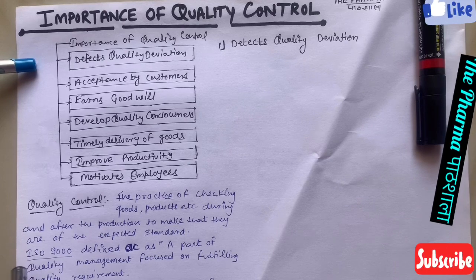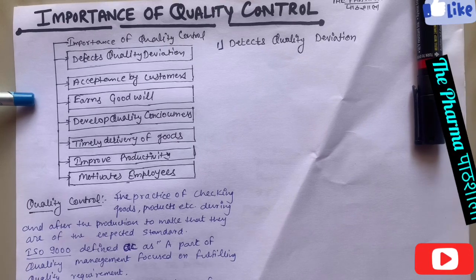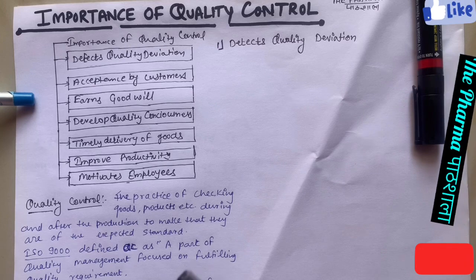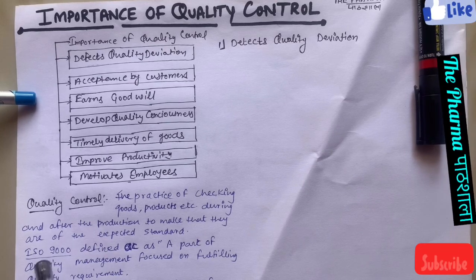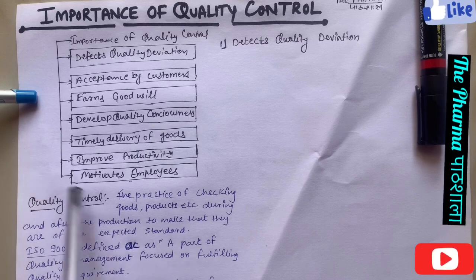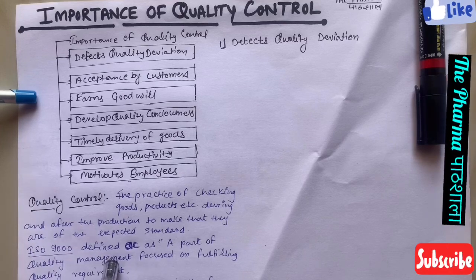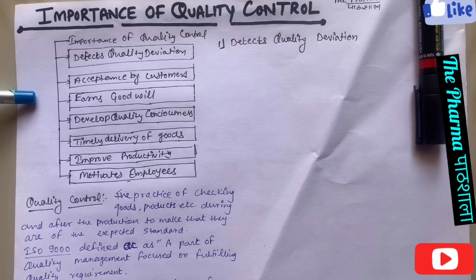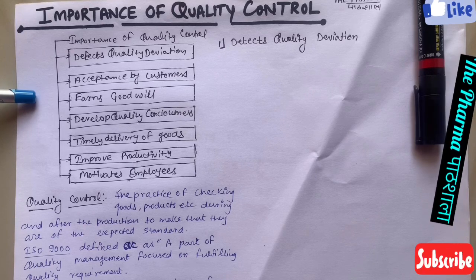एक organization होता है ISO — ISO एक International Organization for Standardization है जो guideline set करता है किसी भी product की quality के लिए। इन्होंने कुछ standards बनाये हैं, guidelines और written documents बनाये हैं। ISO 9000 — यह code word है — इसकी guideline quality control से related करती है। According to ISO 9000, quality control is defined as a part of quality management focused on fulfilling quality requirements।